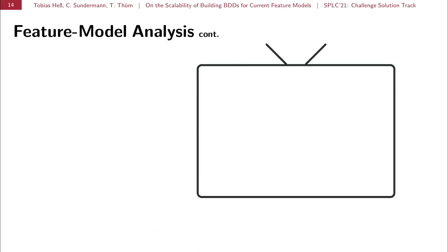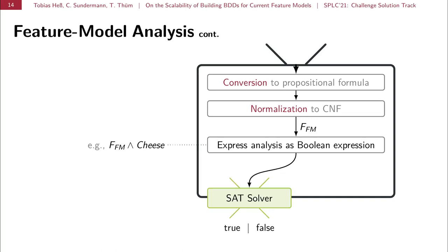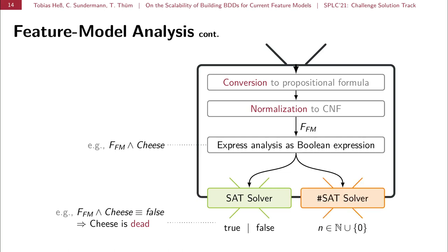And these analysis typically work as follows. We convert the input feature model into a propositional formula. We normalize this formula to a conjunctive normal form or CNF. We express our analysis as a Boolean expression. For example, the propositional formula representing our feature model and then the feature cheese. Then we plug this expression into a SAT solver. And the SAT solver tells us, for example, that the expression is equivalent to false. Meaning that it does not have a satisfying assignment. So then we learn that cheese is in fact a dead feature. On the other hand, we can plug this into a sharp SAT solver and get a number as an output. For example, if the number result is zero, then we again know that cheese is dead. Otherwise, we know that cheese appears in N products.